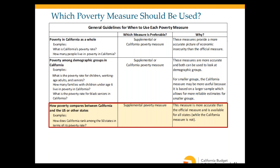To compare California's poverty rate to the U.S. as a whole, or to other states, you need to use the supplemental poverty measure — the California measure was developed specifically for California and cannot be used for other states. The supplemental measure is preferable for this over the official measure for all the reasons discussed.